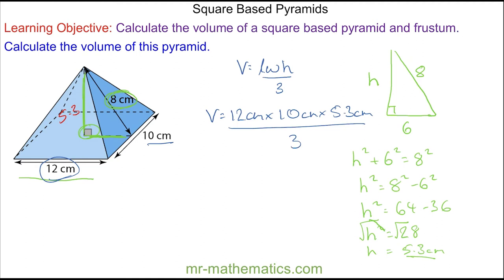We can simplify this fraction by dividing the numerator and denominator by three. So 12 divided by three is four; four times ten becomes 40, times 5.3. So the total volume is approximately 212 centimeters cubed.